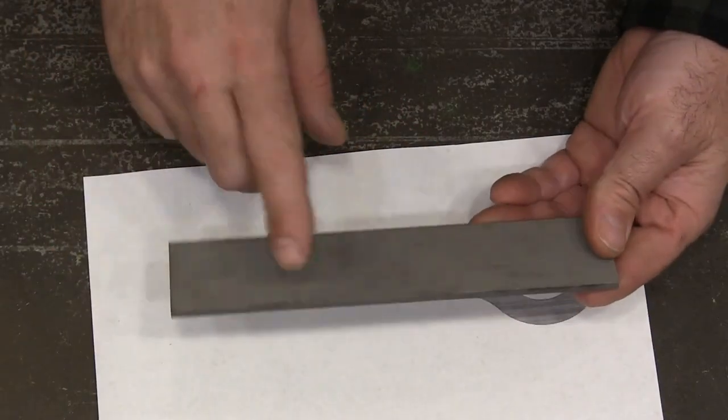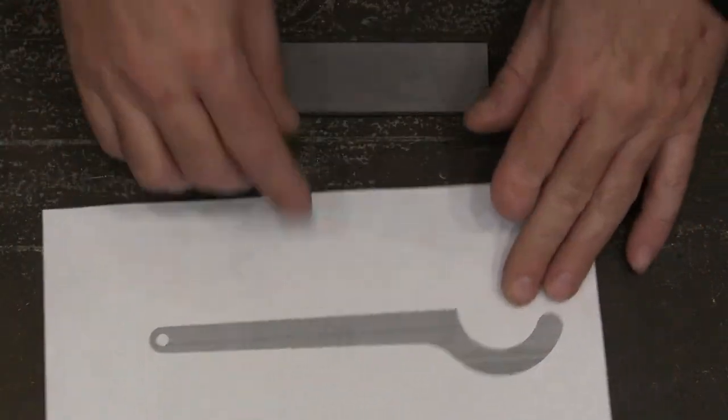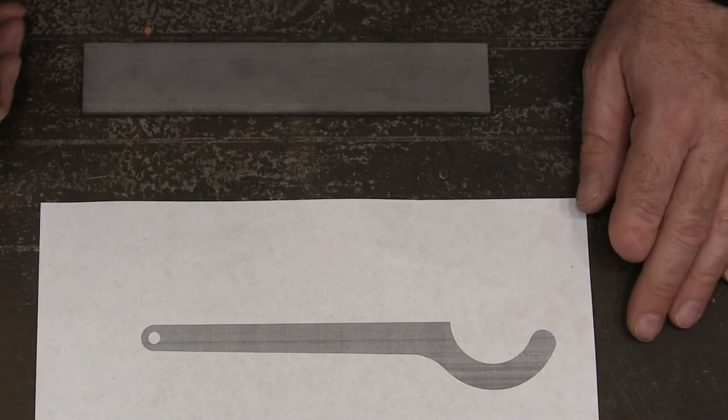If I didn't have the sandblaster, I would have just used a wire brush to clean it up. So the next thing I'm going to do is just cut this out and get it glued on here. I'm just going to use some spray adhesive.